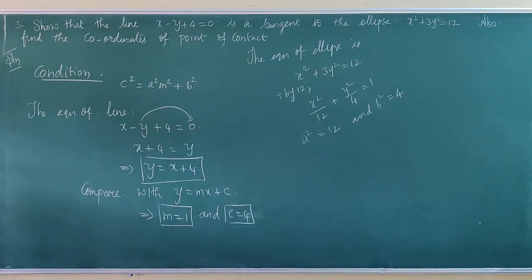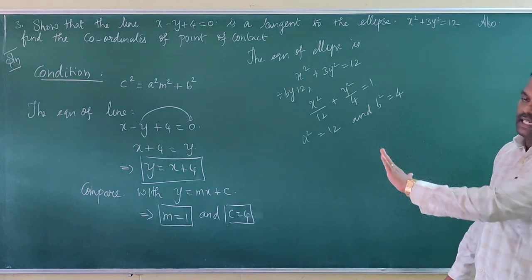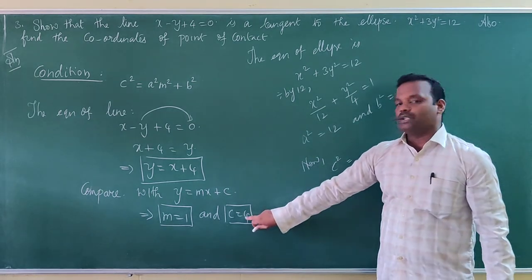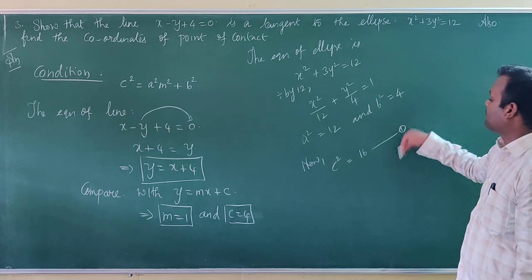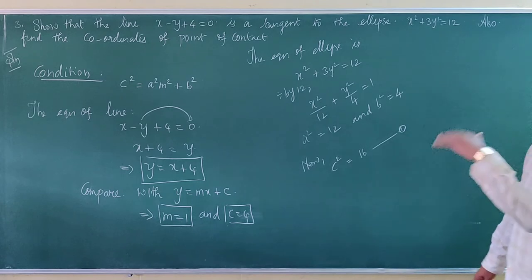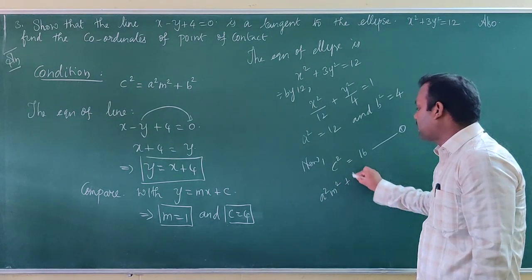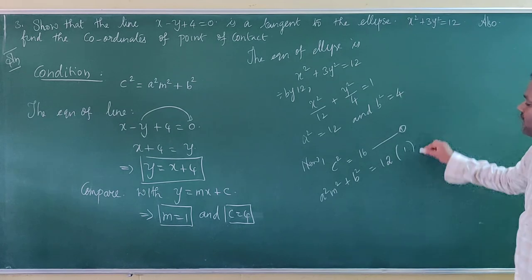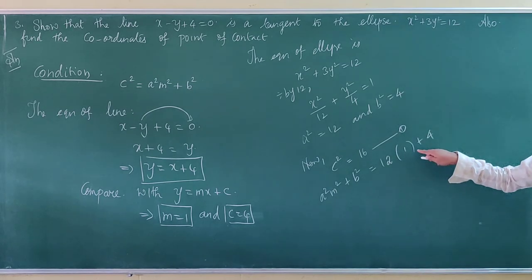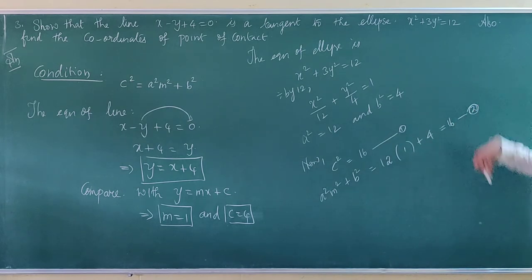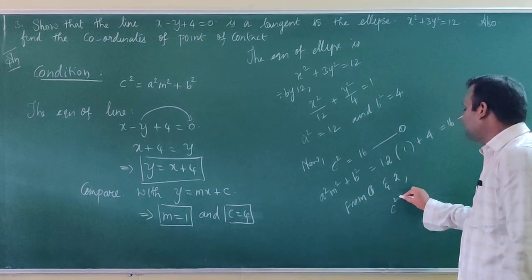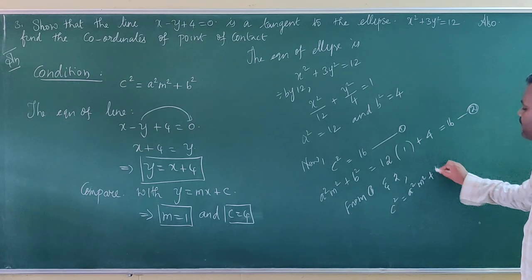Now we check the condition by finding the left-hand side and right-hand side values. The left-hand side is c squared. Since c is 4, c squared equals 16 — call this equation 1. The right-hand side is a squared m squared plus b squared: a squared is 12, m squared is 1, and b squared is 4, so 12 times 1 plus 4 equals 16 — call this equation 2. Observing both sides, the values are the same.